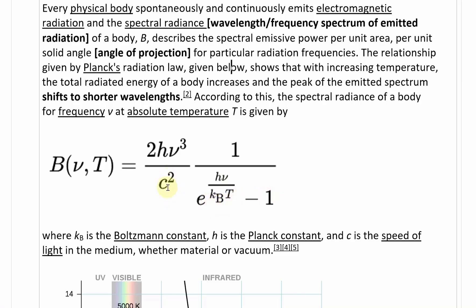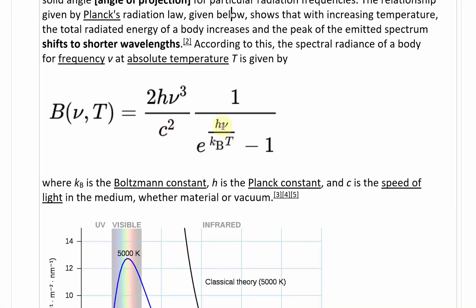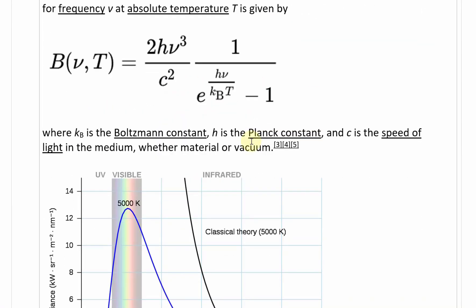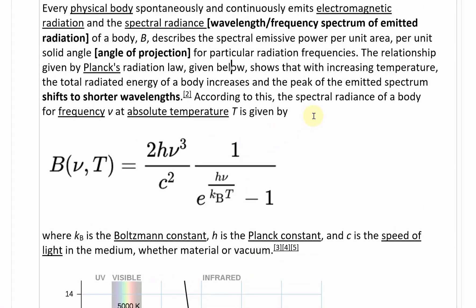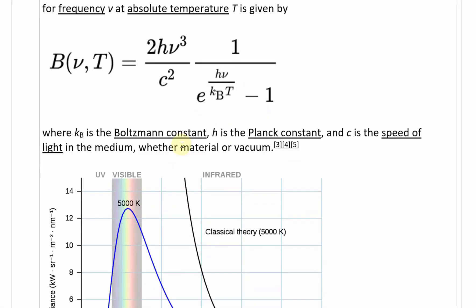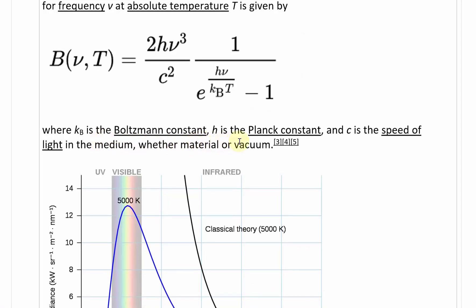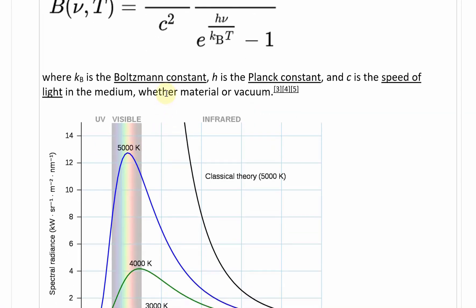This is divided by C squared. So it's slightly different than ours, but this is spectral radiance, and I'll show you the equation that we use in the applied project shortly. Where Kb is Boltzmann's constant, H is Planck constant, and C is the speed of light in the medium, whether material or vacuum.